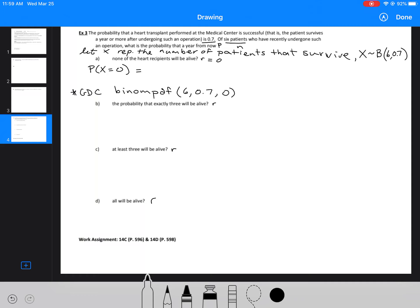So 2nd VARS, option A, or you can just scroll down. Oh, option 0, sorry, binomial PDF. 6, 0.7, and then 0 successes would give us approximately 7.29 times 10 to the minus 4. So pretty small.